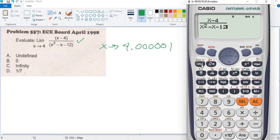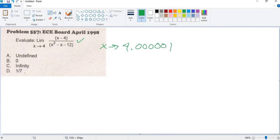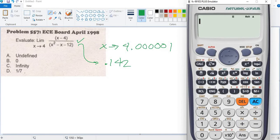So the calculator will ask for the value of x. Input 4.00001 then equals, so 0.142. So this is equal to 0.142. Then, so the answer here is letter D because it has the value...